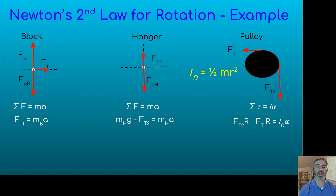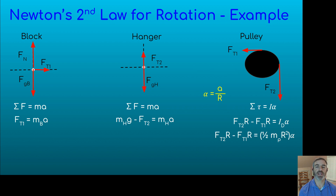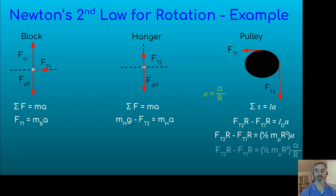We substitute the rotational inertia equation for a disk into our torque equation. We also know that angular acceleration times the radius equals the tangential acceleration at the outermost edge. So we can rearrange to get alpha equals a divided by R, and substitute a over R in for alpha. The tangential acceleration of the outermost edge of the pulley equals the translational acceleration of both the block and the hanger.